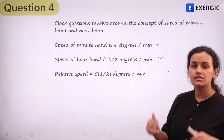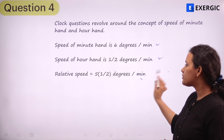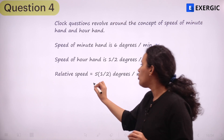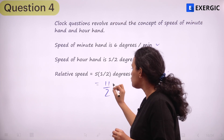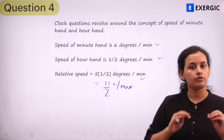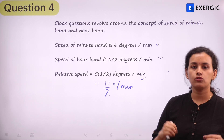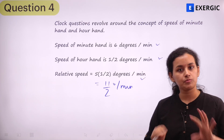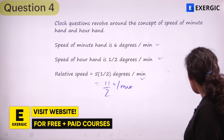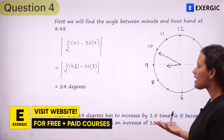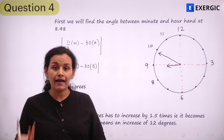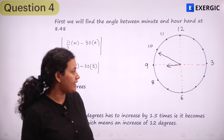If you consider the relative speed, it is going to be 5.5 degrees per minute, or 11/2 degrees per minute. This is something you should remember, as it is the fundamental concept of clock questions. Now let us find the angle at 8:48 AM.